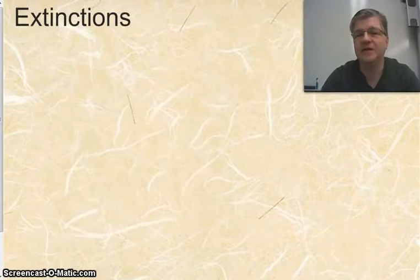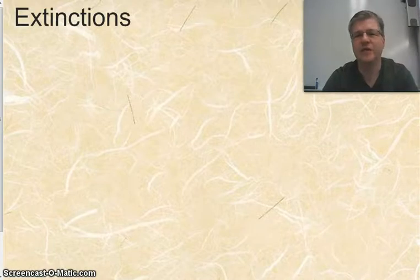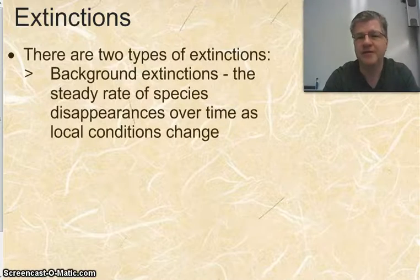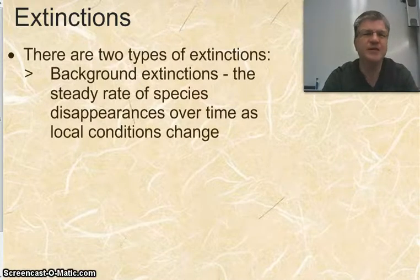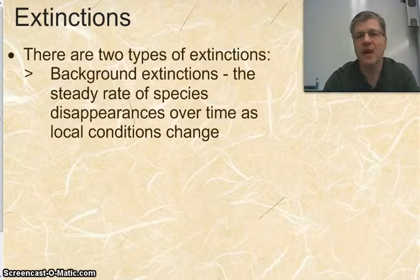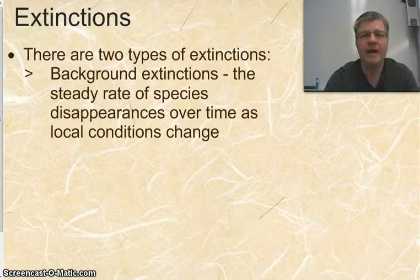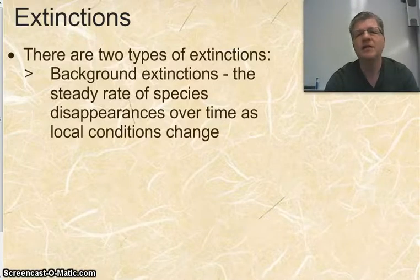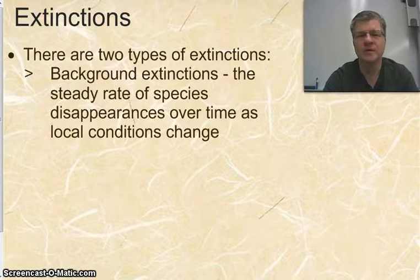Next we need to talk about extinctions. You really can't talk about evolution at all without understanding the fact that some species just simply don't make it, and that's where extinctions come from. We have two types of extinctions. One type is what are called background extinctions — species that over time haven't evolved enough to fit into their environment and have just died off. This happens all the time. Today there are going to be species becoming extinct somewhere in the world, and this is probably true just about every day through all of life's history.